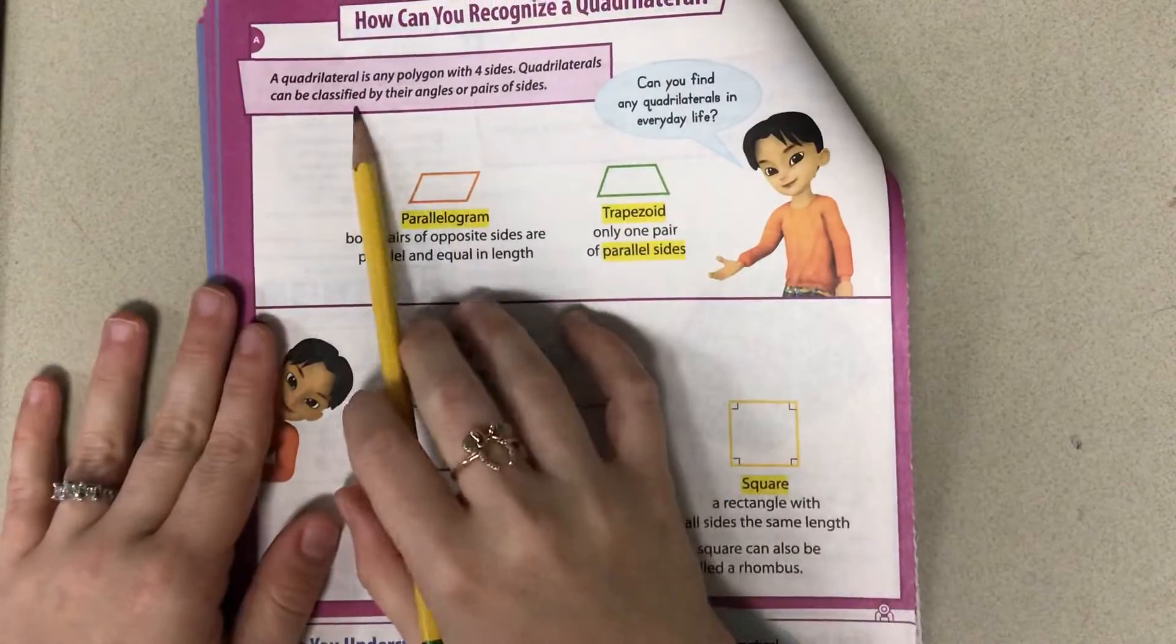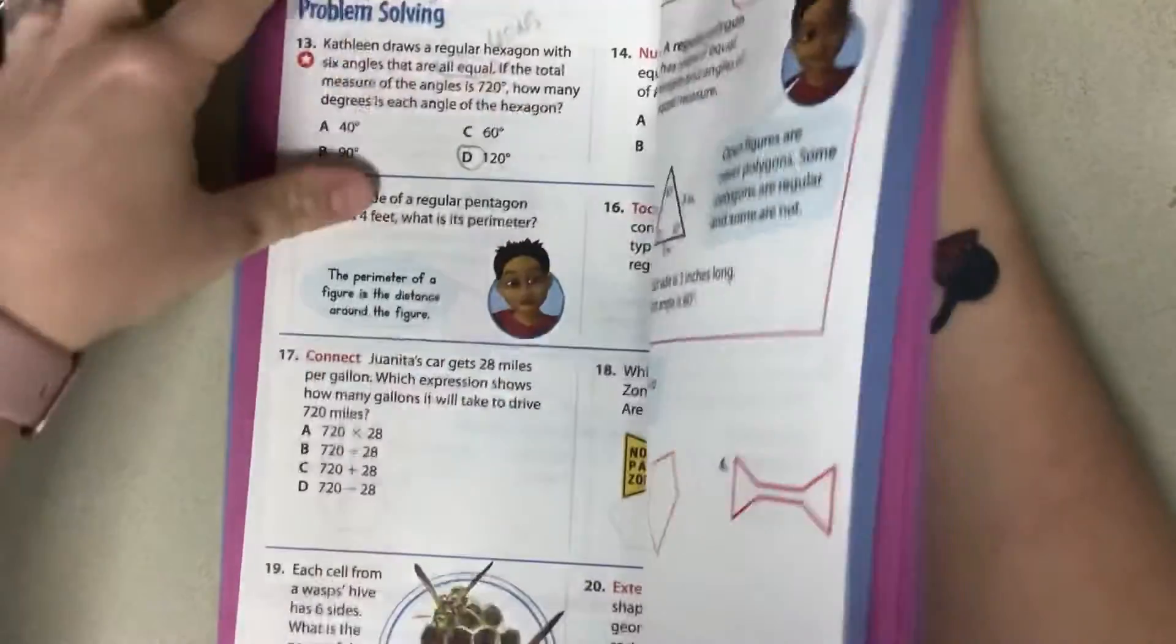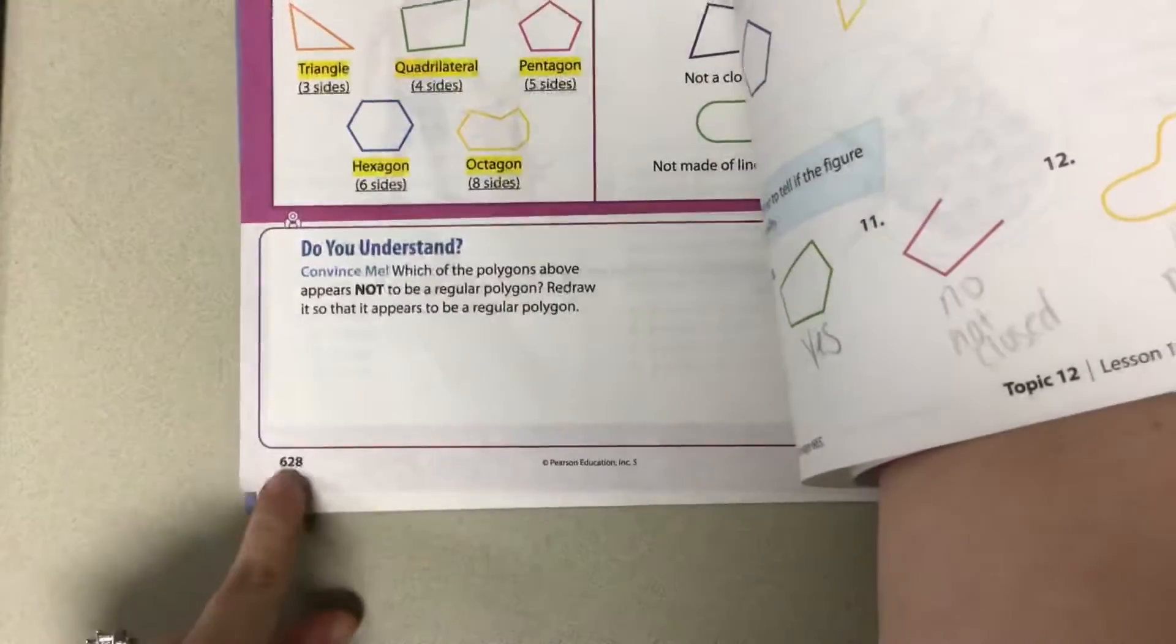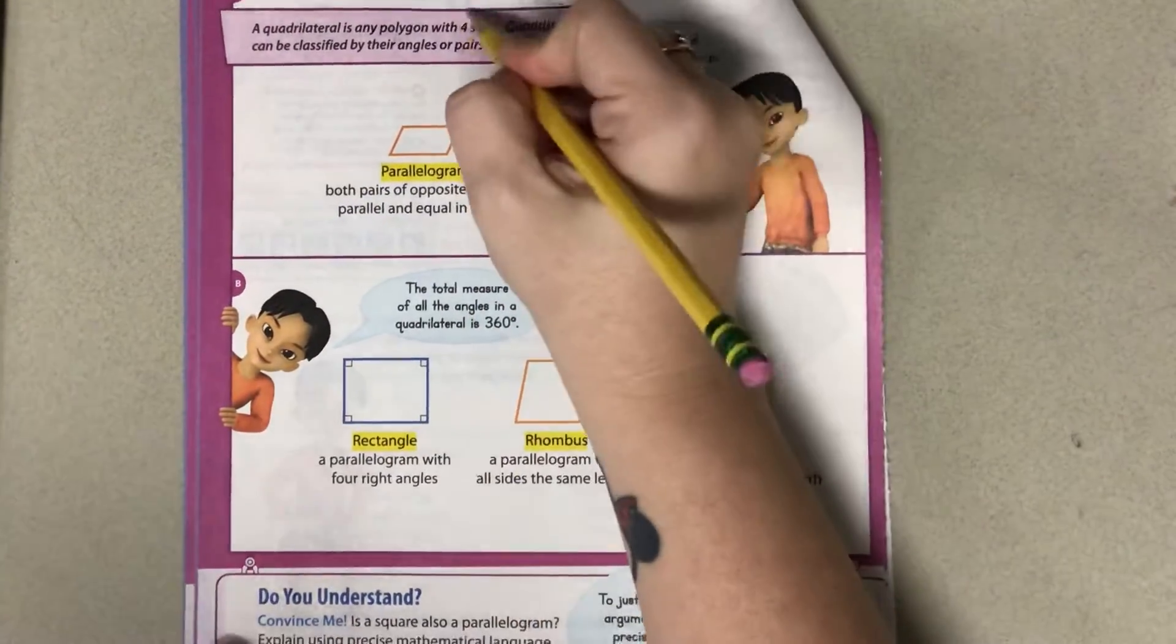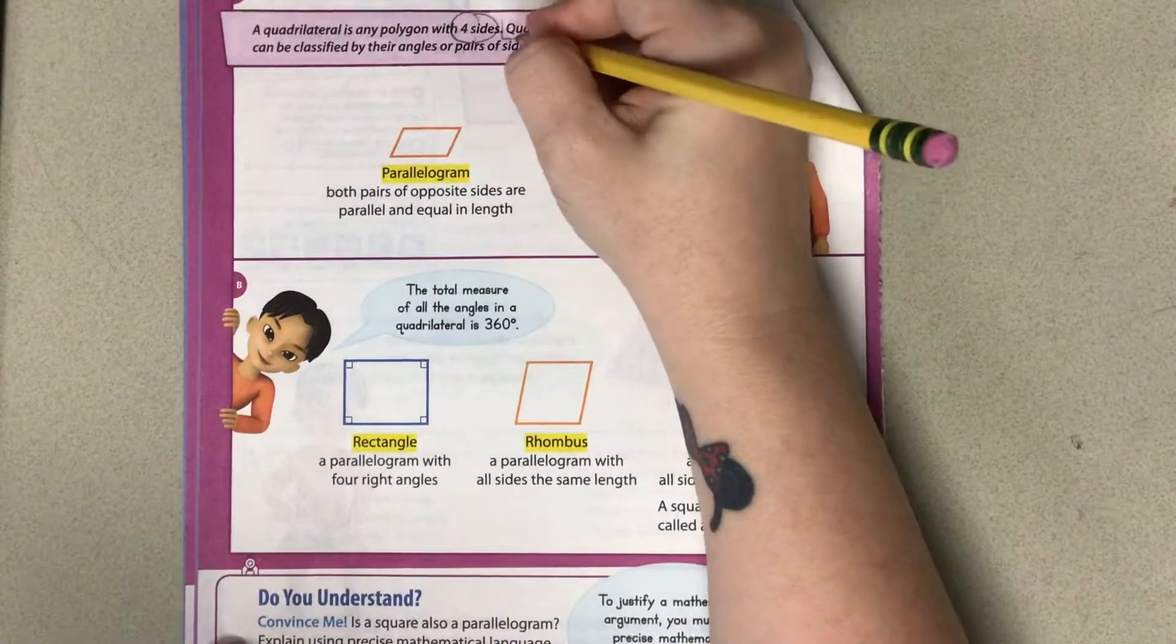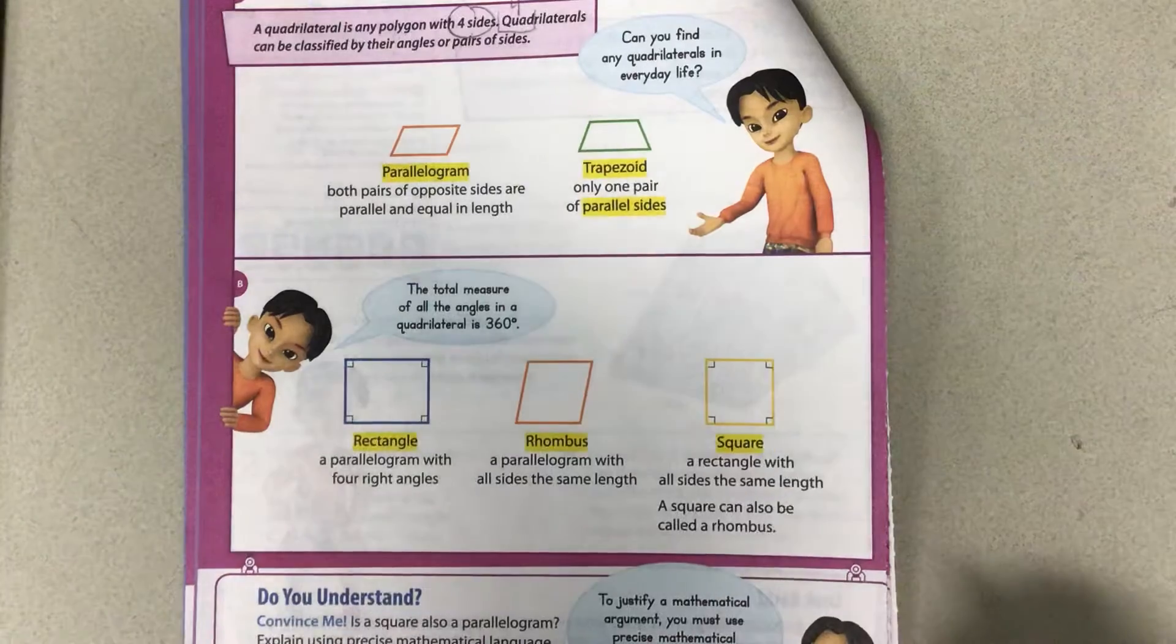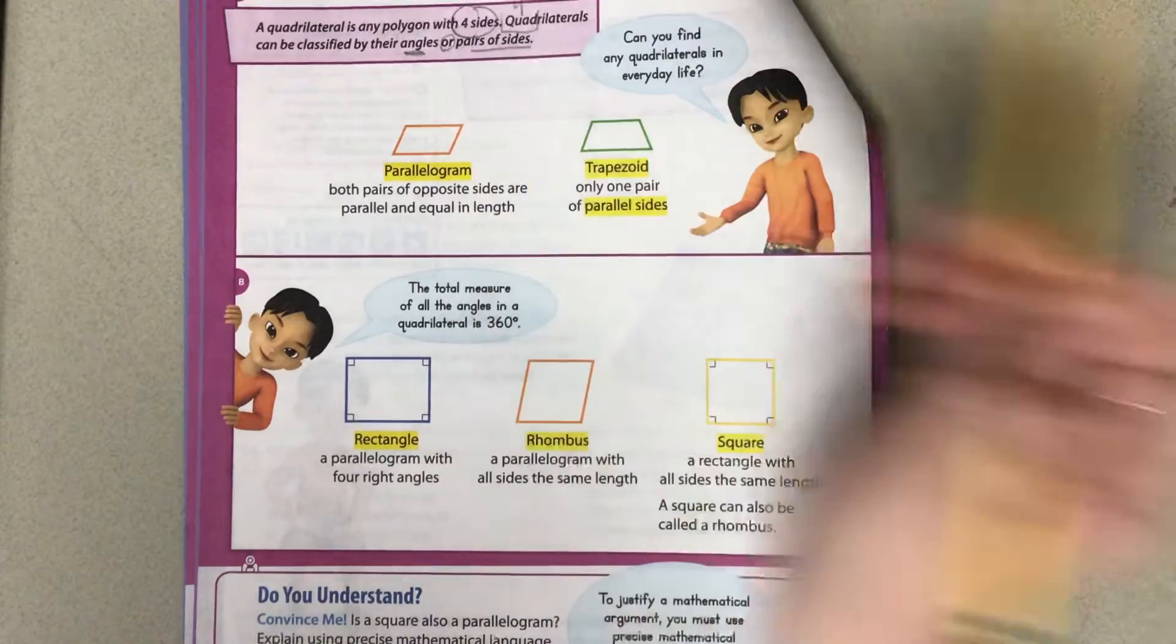It says a quadrilateral is any polygon, and remember we talked about polygons in the first lesson. If you need a reminder, that's on page 628. So that polygon, but it has four sides. That's what's super important. That word quad means four. So we have four sides, and they're classified by their angles or their pairs of sides.